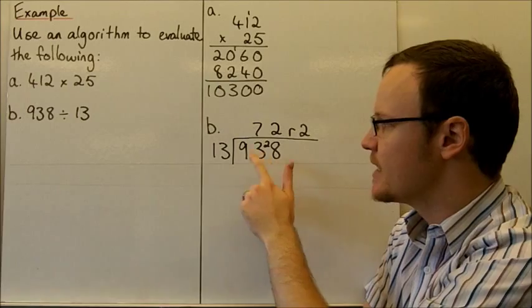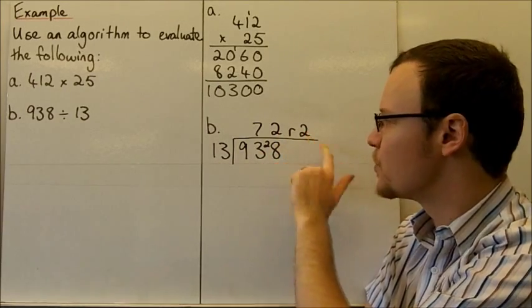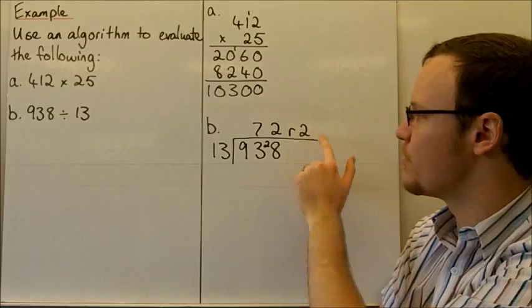Then we have 28. 13 goes into 28 two times with 2 left over, so there's a remainder of 2.